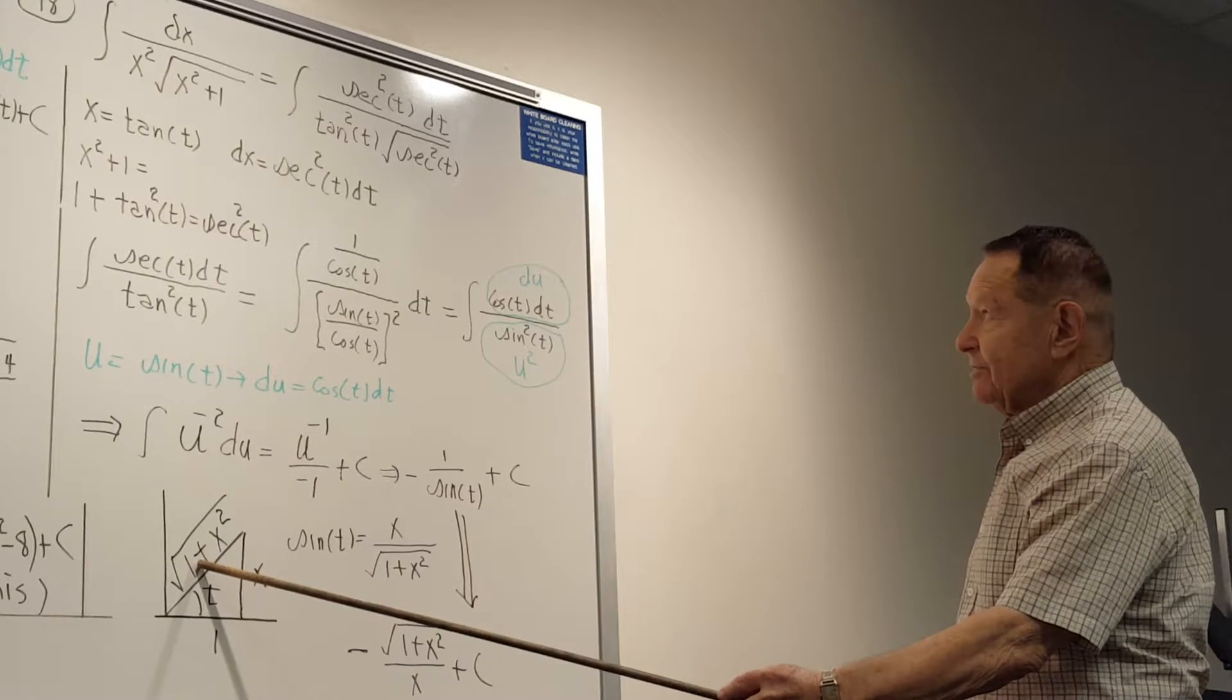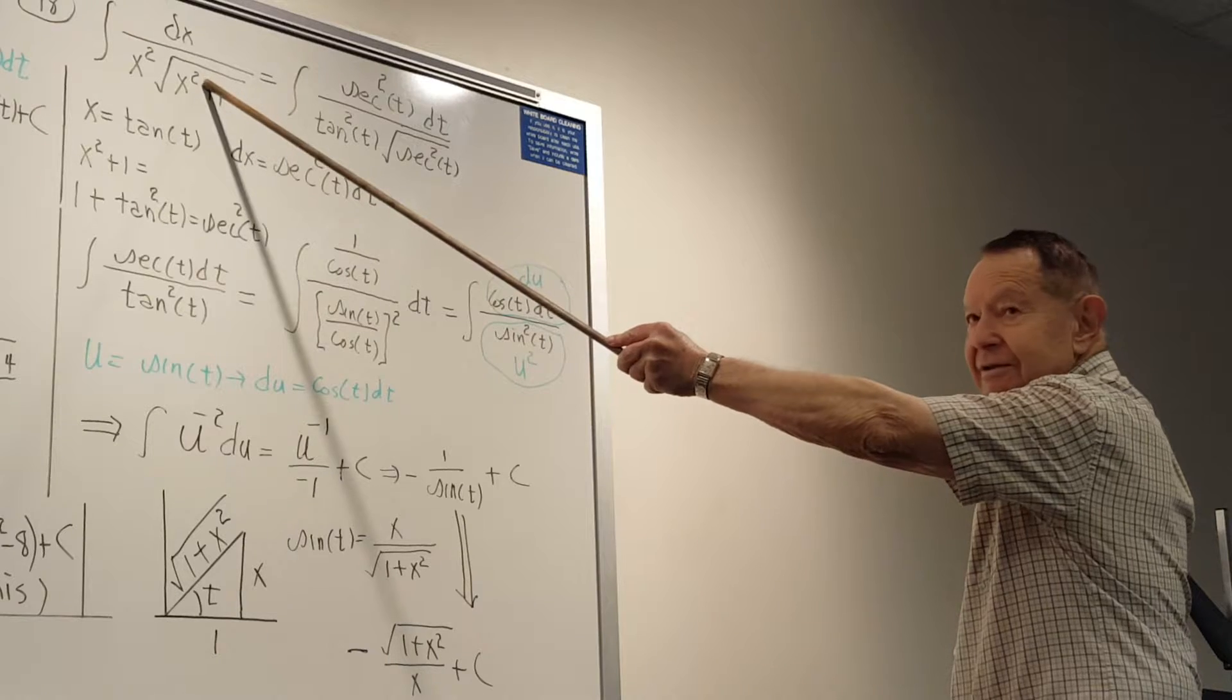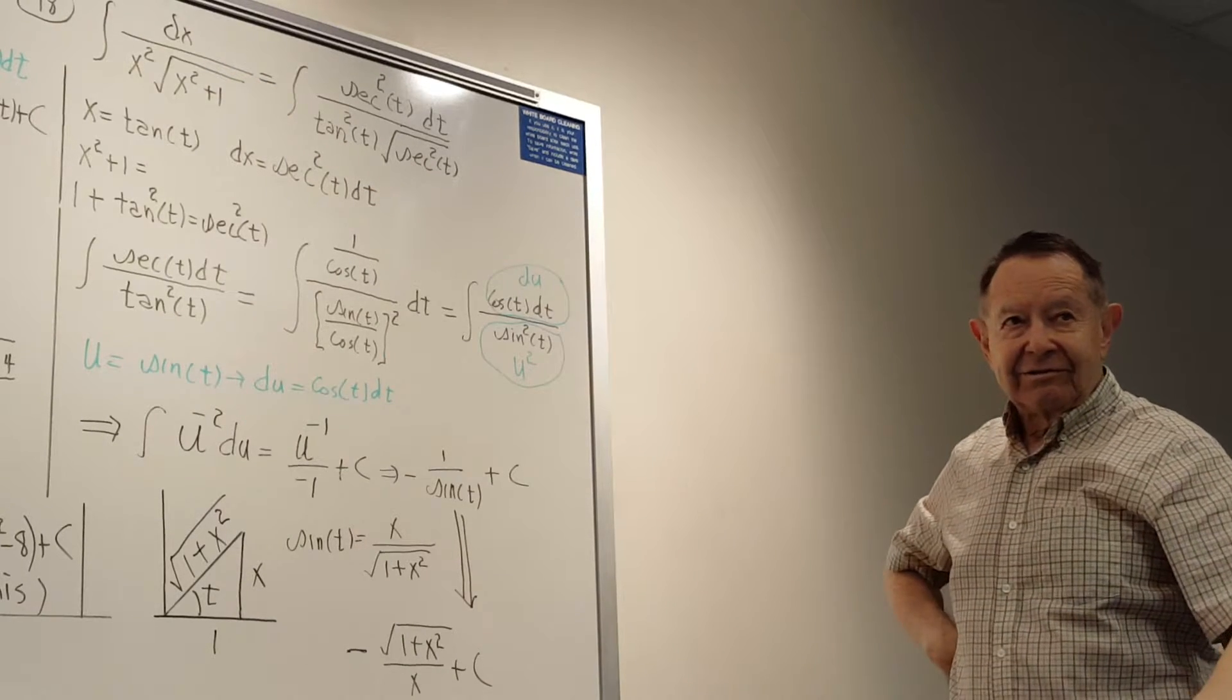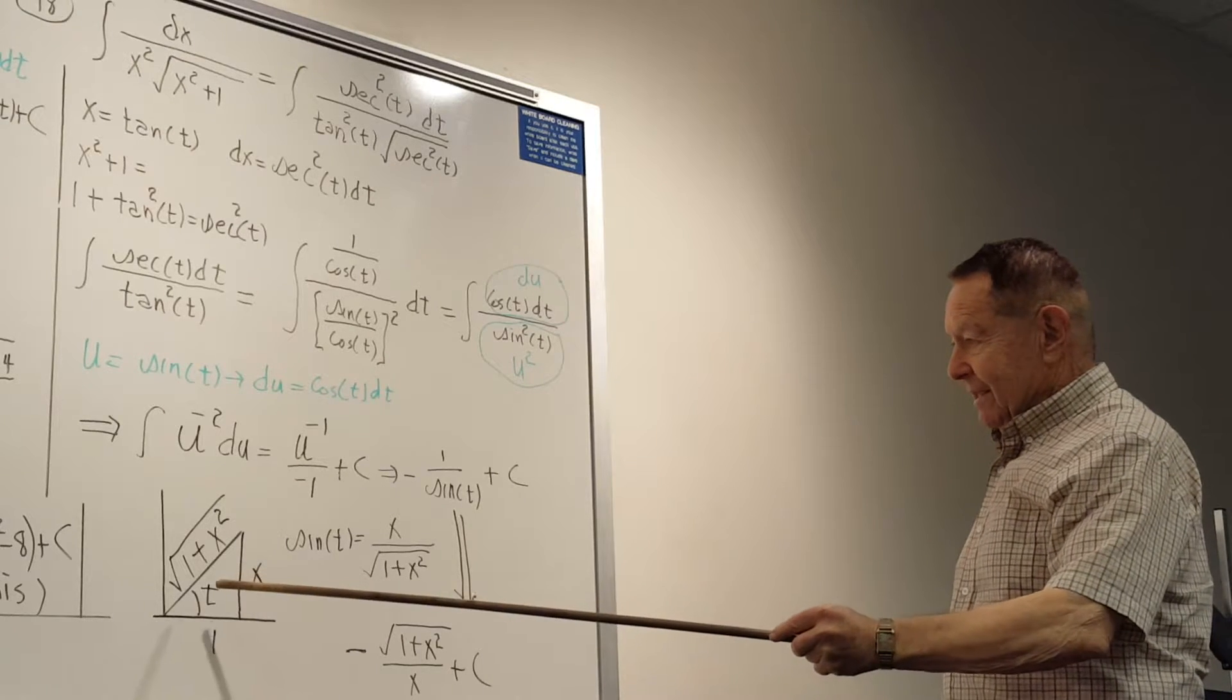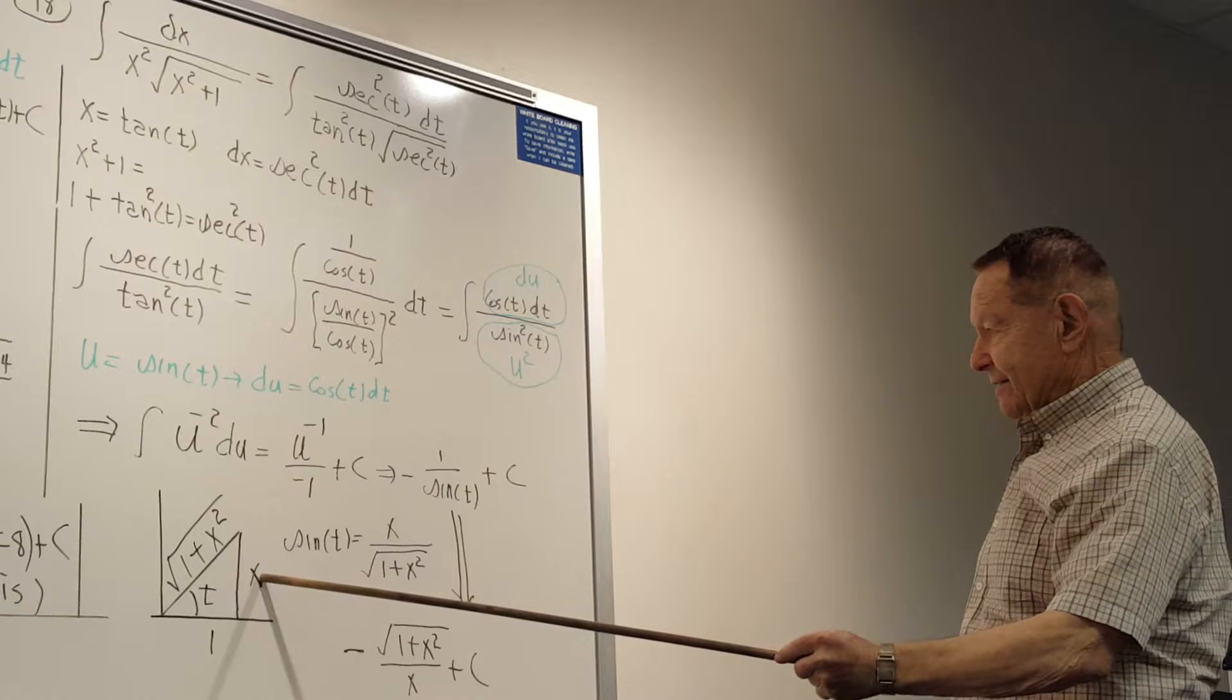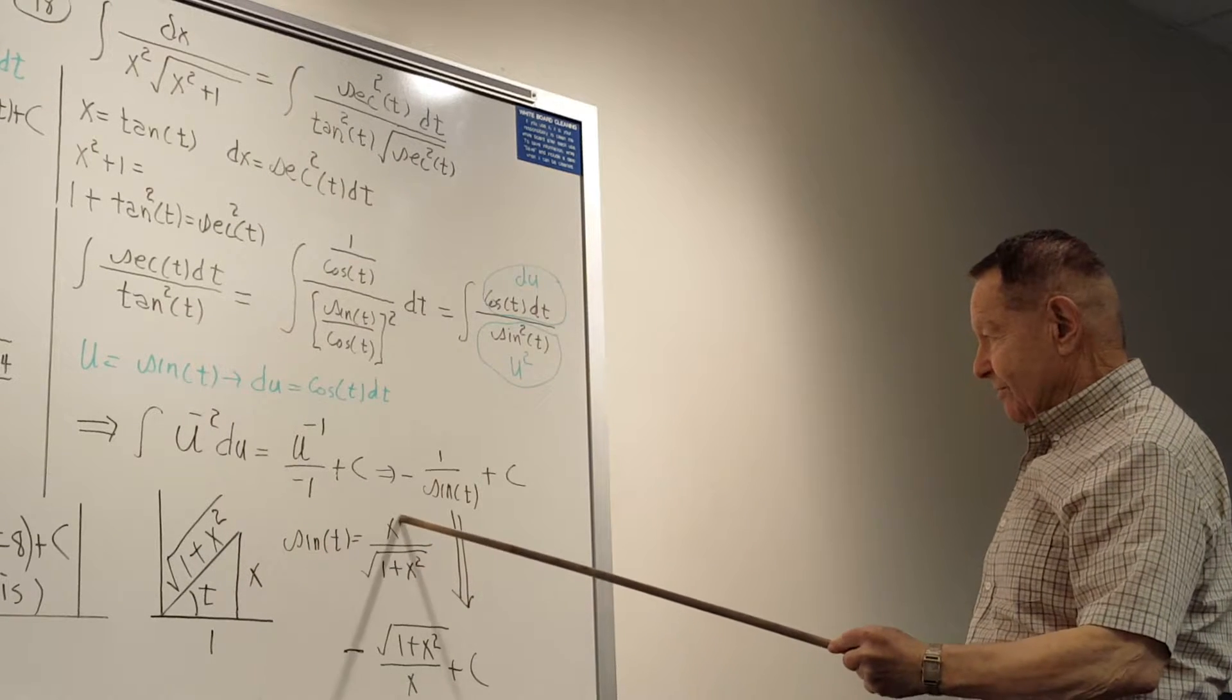So here's t and tangent is opposite over adjacent. Here's your third side, which of course is always the radical that was in the original problem. And then if you are looking at this, sine is x over the square root.